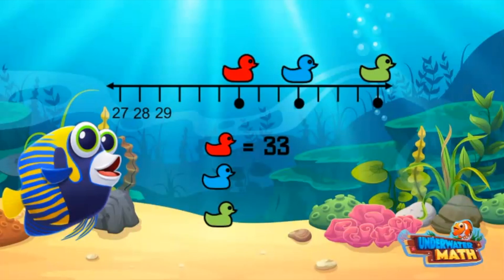Now let's find the blue duck. We know the red duck is at 33, so we can count on from 33 until we reach the blue duck. 34, 35, 36. The blue duck is located at 36.